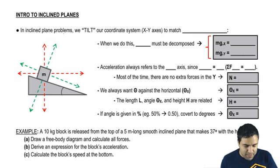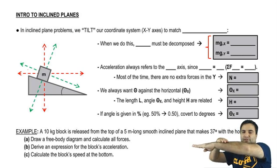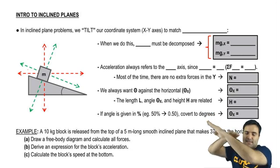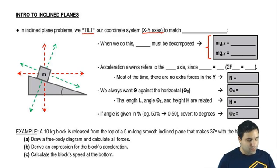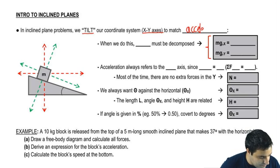Alright, so in inclined plane problems, basically whenever you have a block that instead of sitting on a flat surface sits at a surface that's at an angle, we have to tilt our coordinate system. Coordinate system just means the x and y axis, and we do this because we want to match our acceleration.